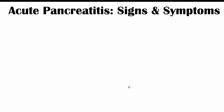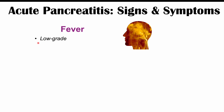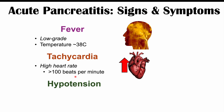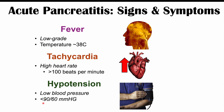Vital sign changes in acute pancreatitis include a low-grade fever around 38 degrees Celsius, tachycardia with a heart rate greater than 100 beats per minute, and hypotension with blood pressure less than 90 systolic and 60 diastolic. Please check out the full lesson on acute pancreatitis for more information, and please like and subscribe for more lessons like this one. Thanks so much for watching.